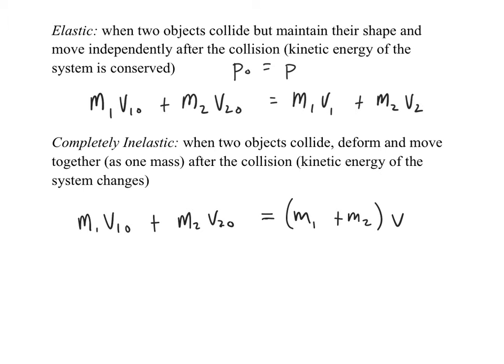Total energy in the system is always conserved. Although we might lose kinetic energy, KE1_before + KE2_before may not equal KE1_after + KE2_after. We add some energy loss term — I'll use Q for now, representing energy loss or gain. Q could be a gain or a loss: you could start with less energy and end with more kinetic energy, or vice versa.